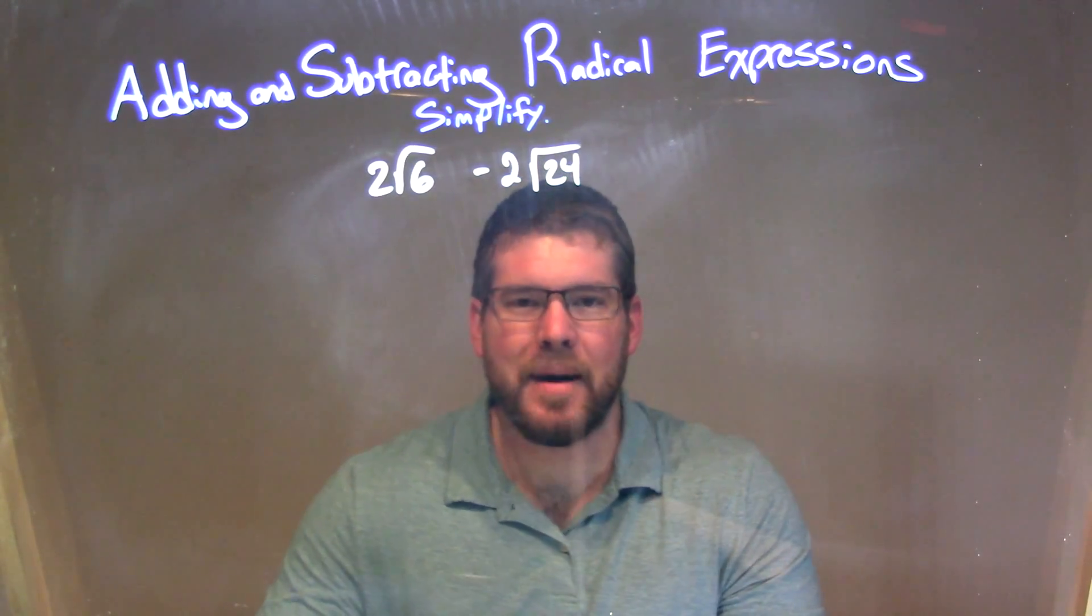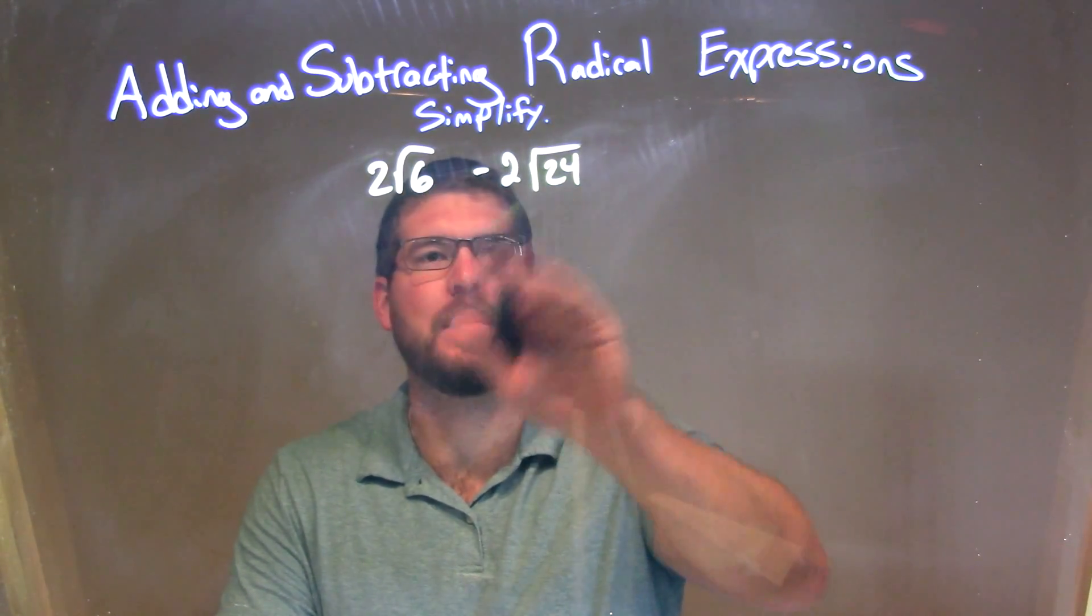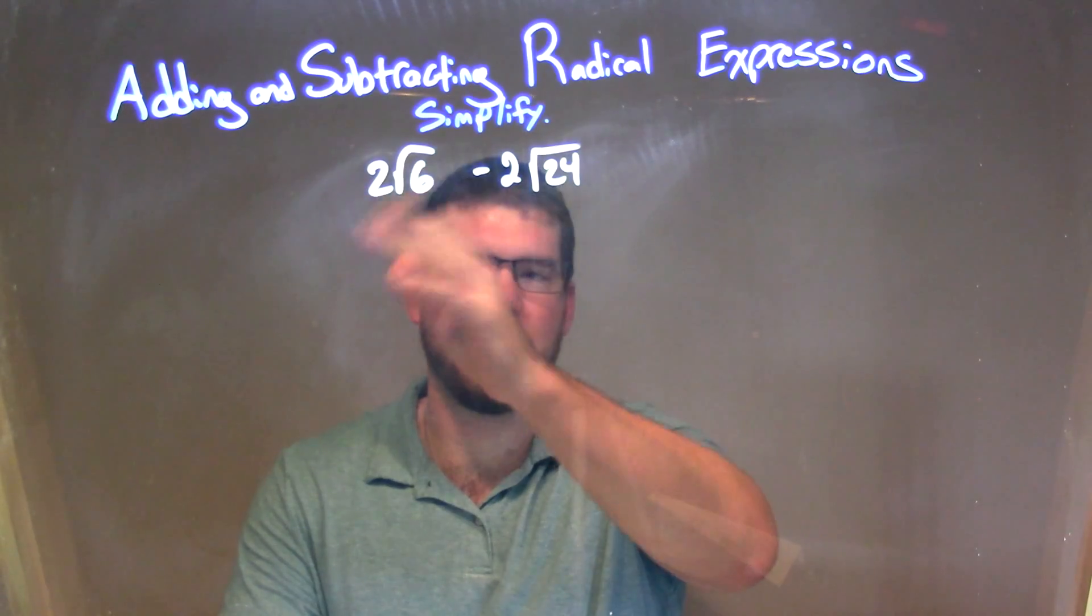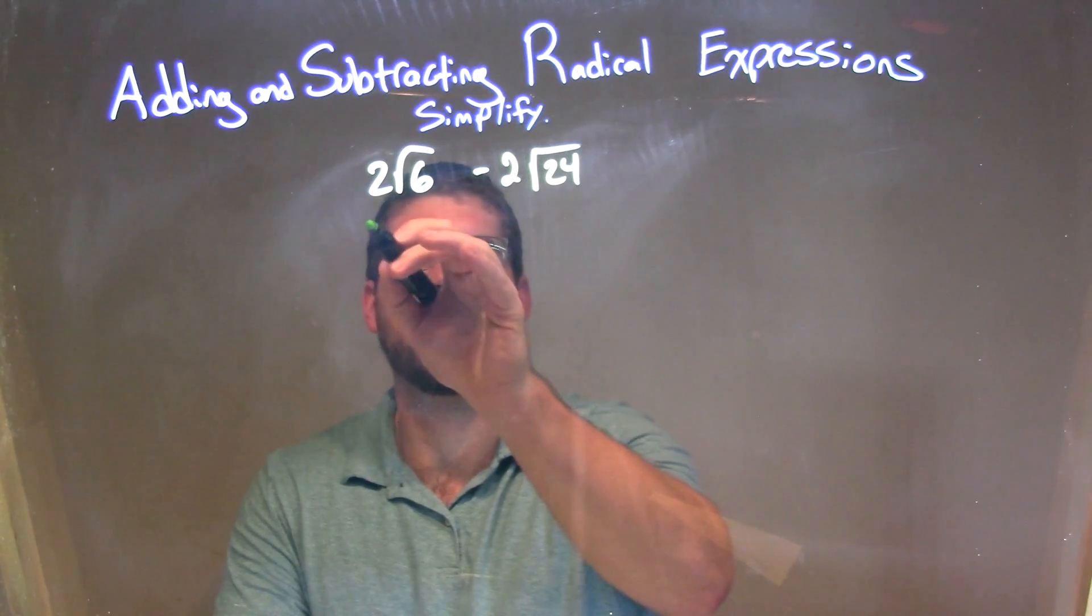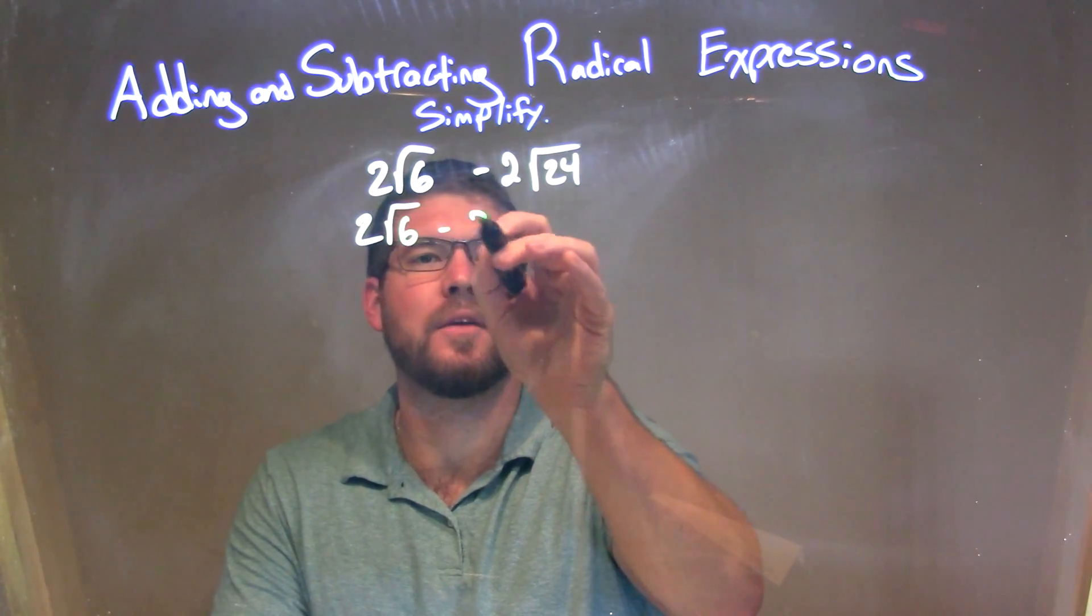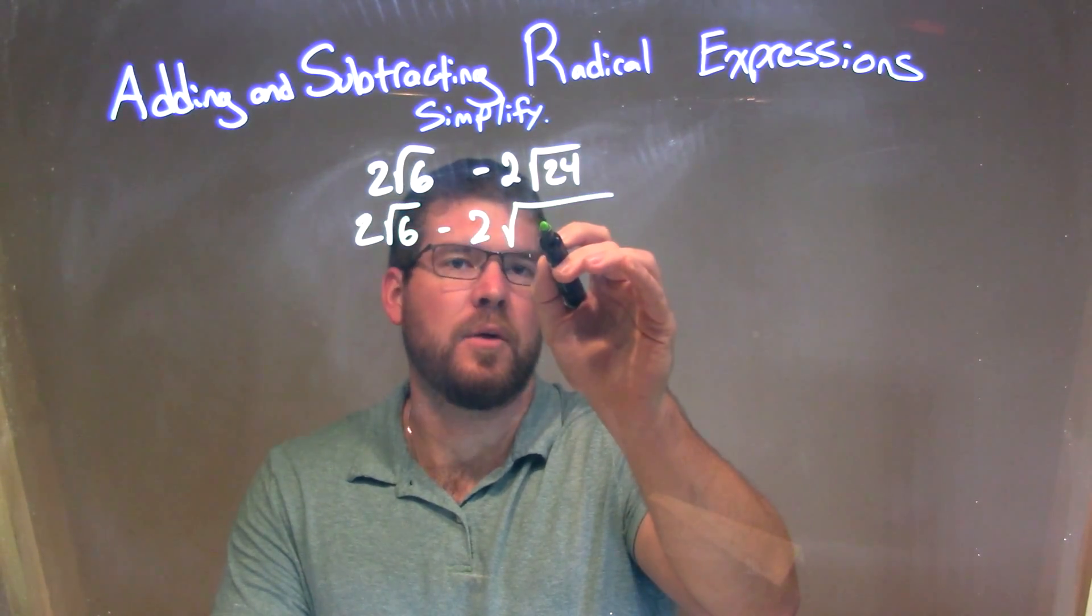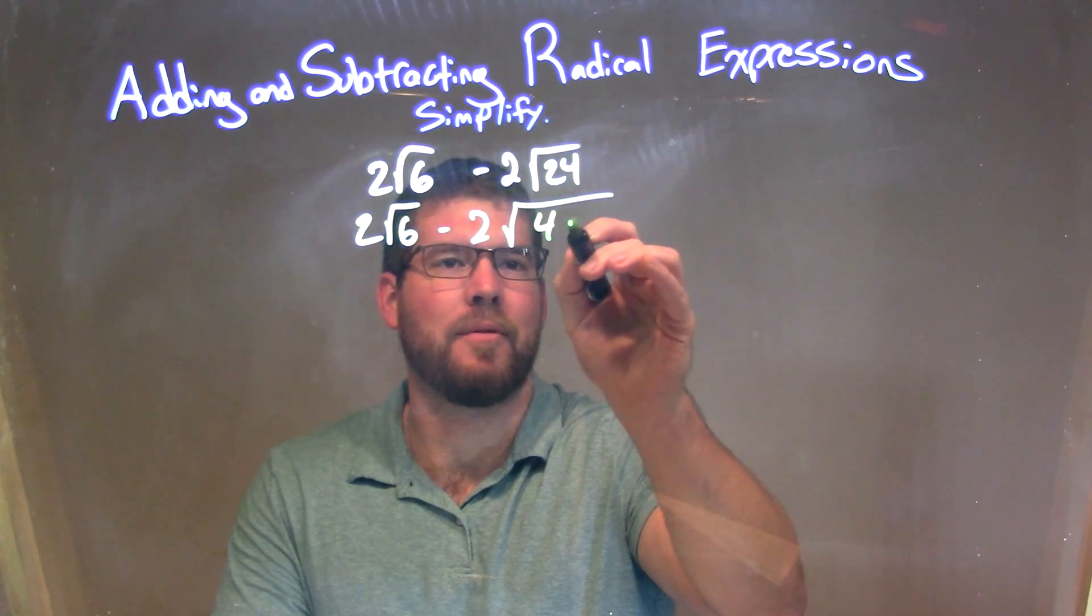Well, right now we cannot combine it as it is. We don't have the same square root being multiplied by a number in front. But square root of 24, I can adapt that to be 4 times 6. So we have 2 times the square root of 6 minus 2 times 4 times 6.